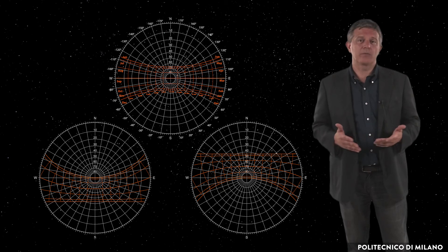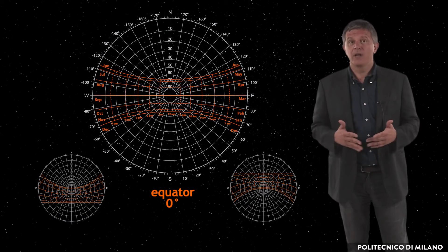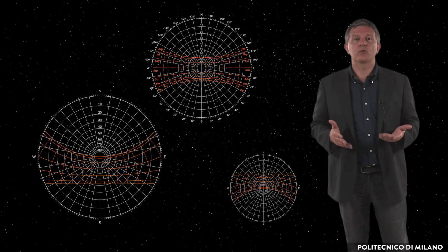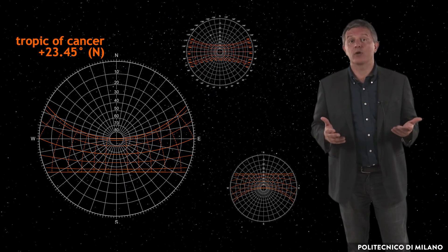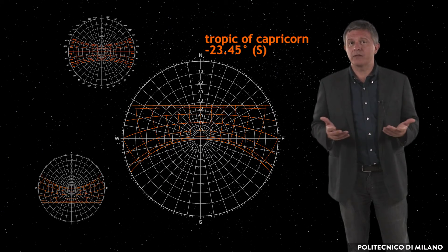A specific diagram must be traced for each specific latitude, because the apparent movement of the Sun changes with the observer's position on Earth. For example, here you can see the diagram related to the equator, to the latitude of plus 23.45 degrees north, Tropic of Cancer, and to the latitude of minus 23.45 degrees south, Tropic of Capricorn.